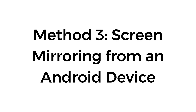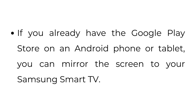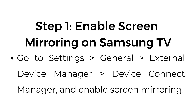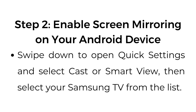Method number three: Screen mirroring from an Android device. If you already have the Google Play Store on an Android phone or tablet, you can mirror the screen to your Samsung Smart TV. First, enable screen mirroring on your Samsung TV by going to Settings, General, External Device Manager, Device Connect Manager, and enabling screen mirroring. Then on your Android device, swipe down to open Quick Settings and select Cast or Smart View, then select your Samsung TV from the list.